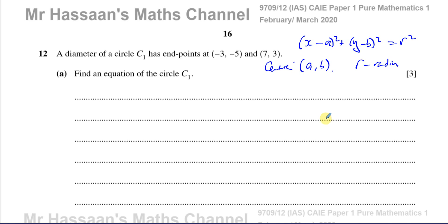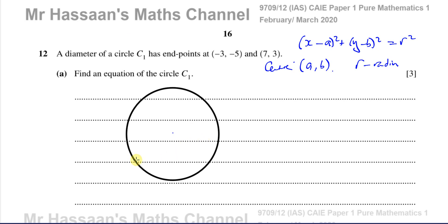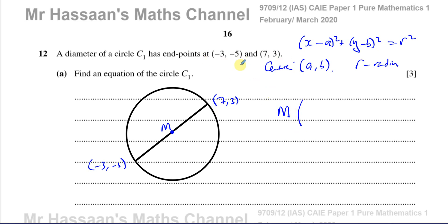To find the center of the circle, we know the diameter has endpoints at minus 3, minus 5 and 7, 3. Since the center lies exactly halfway between these two endpoints, we find the midpoint of those two points, which gives us the center of the circle. The midpoint is found by taking the average of the x coordinates and the average of the y coordinates.